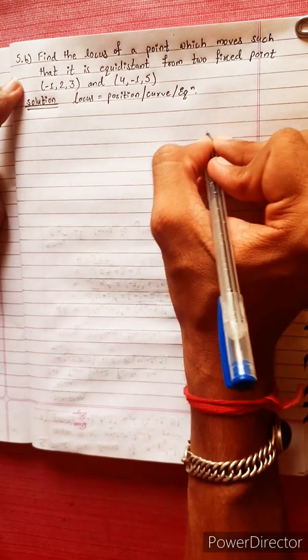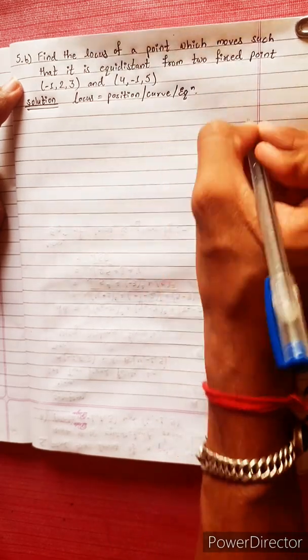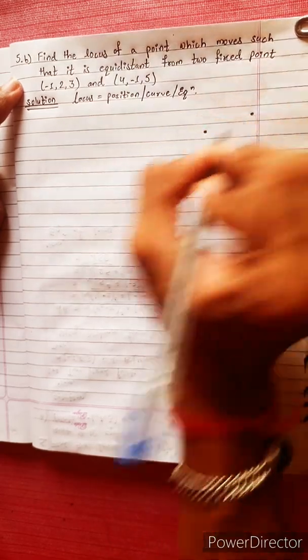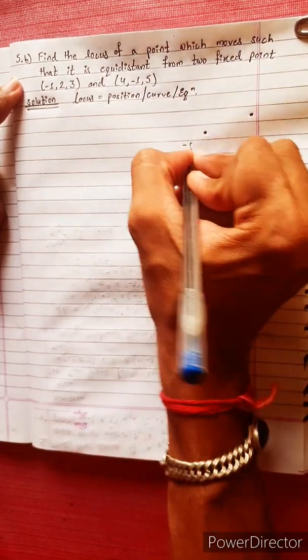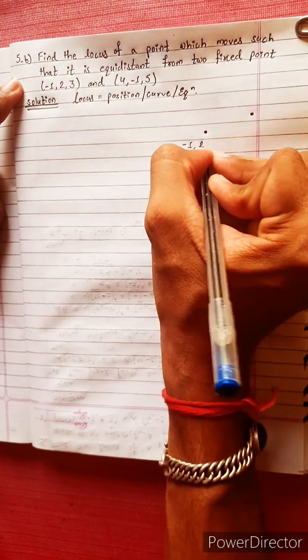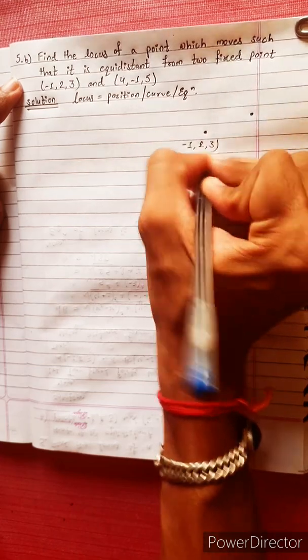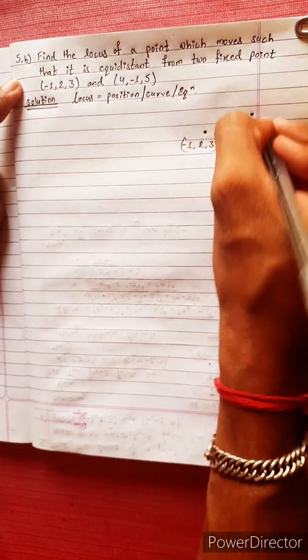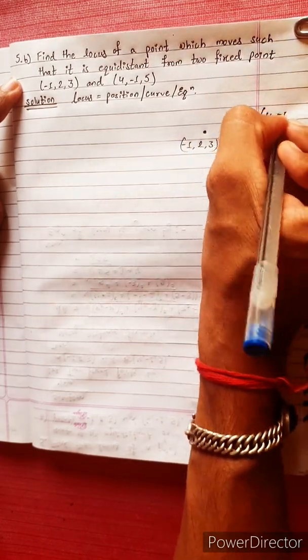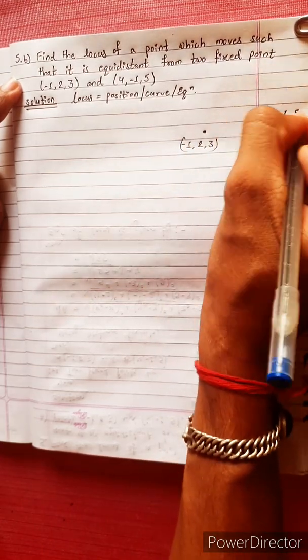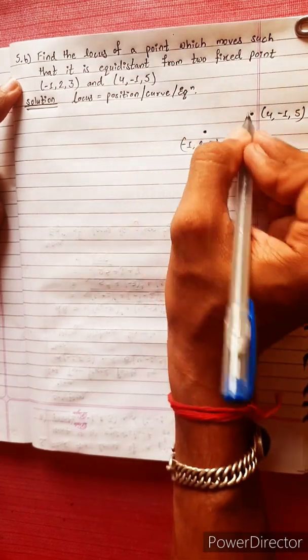Now we have two fixed points. Suppose we have fixed points here and here. We have A(-1, 2, 3) and B(4, -1, 5). These are our two fixed points.